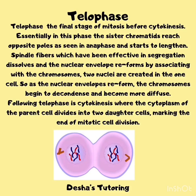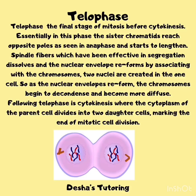Telophase is the final stage of mitosis before cytokinesis. In this phase, the sister chromatids reach opposite poles as seen in anaphase and start to lengthen. Spindle fibers, which have been effective in segregation, dissolve and the nuclear envelope reforms by associating with the chromosomes. Two nuclei are created in the one cell. As the nuclear envelope reforms, the chromosomes begin to decondense and become more diffuse. Following telophase is cytokinesis, where the cytoplasm of the parent cell divides into two daughter cells, marking the end of mitotic cell division.